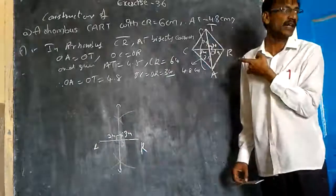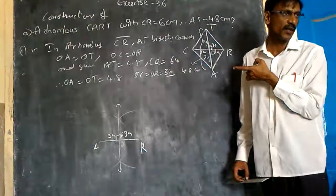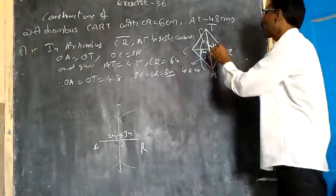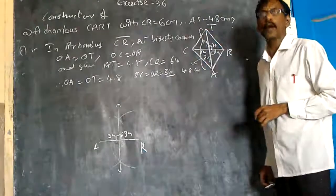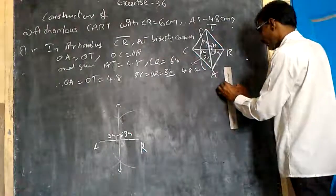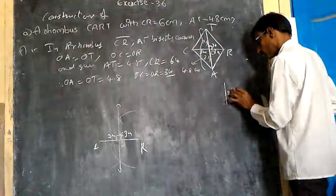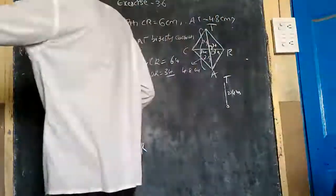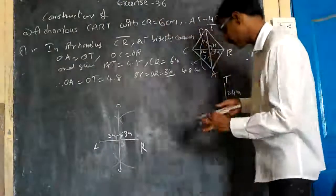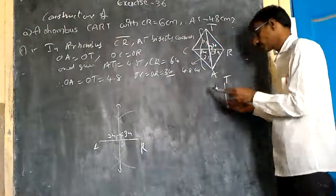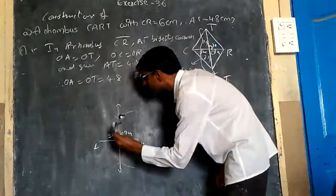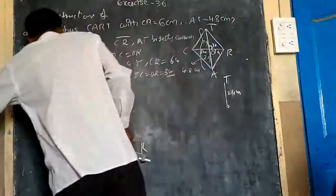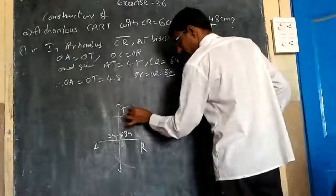O-C equals O-R equals 3 centimeters. From the perpendicular bisector, we take 2.4 centimeters — that is because the diagonals bisect at right angles, which is why we choose the perpendicular bisector. Now, from here to here is 2.4 centimeters. I will take 2.4 cm — this is O-T, keep in mind. I will take an arc here — this is my arc — here we have point T.